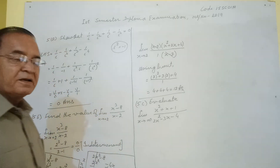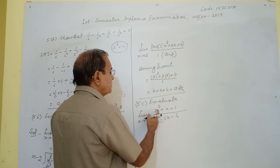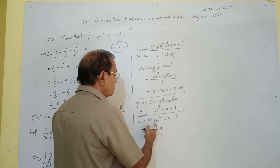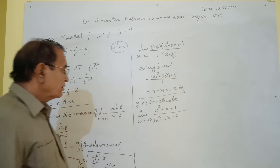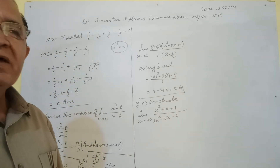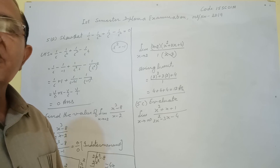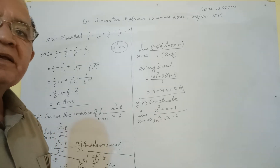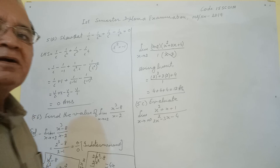Part c: evaluate the limit as x approaches infinity of (x² + x + 1)/(2x² - 3x). When x approaches infinity, take the highest power x² common from the numerator as well as from the denominator.